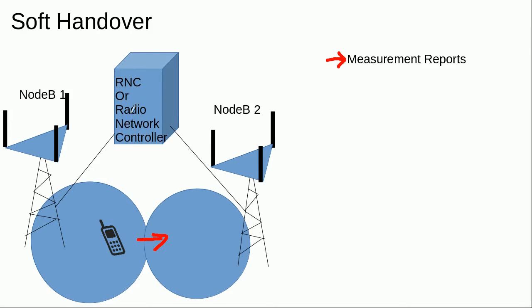Due to this measurement report, the RNC would know that as the mobile is moving from Node B number 1 to Node B number 2, the power of Node B number 2 is increasing and the power of Node B number 1 as received by the mobile is decreasing. So when the power of Node B number 2 increases a certain threshold, the RNC instructs the mobile to add Node B number 2 in its active set, and for that it sends the active set update command to the mobile via Node B number 1. This means that this mobile station would now connect to Node B number 2, or in other words, this mobile is in a state of soft handover with Node B number 2 while it is also still connected with Node B number 1.